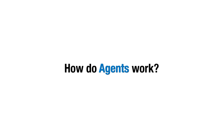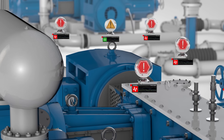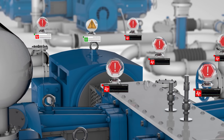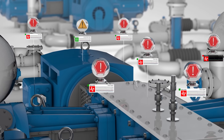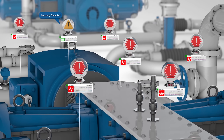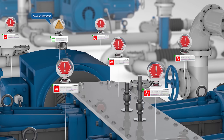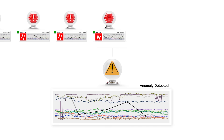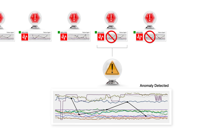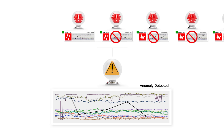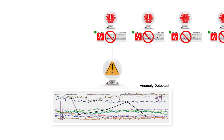How do agents work? Once agents have been trained from historical data, they are deployed to monitor live equipment feeds. All deviations from normal behavior are labeled as anomalies and detected by the anomaly detector agent. If an anomaly does not match the signature of a deployed failure agent, the anomaly triggers an alert requesting an inspection to determine the cause.